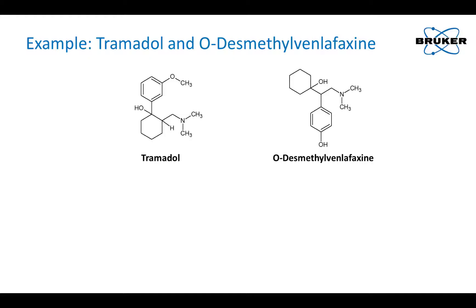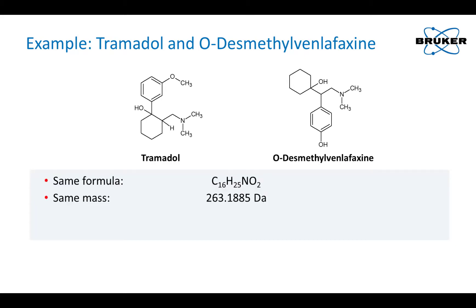So how is it possible to separate such isobaric co-eluting analytes? Both compounds have different structures but the same formula, the same mass, the same retention time, and similar fragment spectra. However, they have different collision cross-sections.